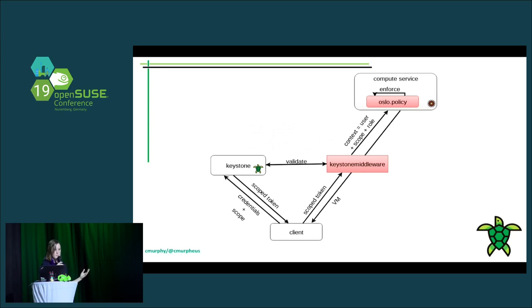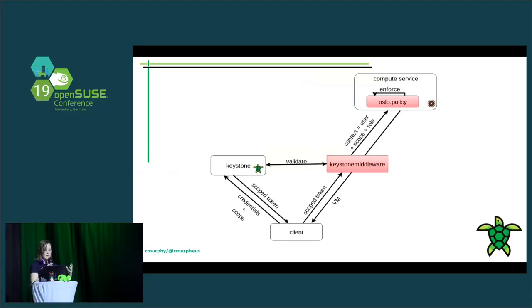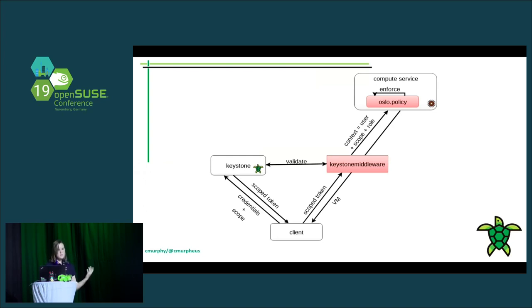With this authorization component, here's a more complete visualization of how a request works in OpenStack. The clients, along with their username and password, need to also request a scope from Keystone, and Keystone sends back a scoped token. They pass that token to the service they're trying to request a resource from, the token gets validated with Keystone, and then it's translated into a context for the service to evaluate. The service itself is responsible for deciding whether the user is authorized, using a policy library and decorators on their API routes. If the policy checker passes, the service grants the resource the user is requesting.